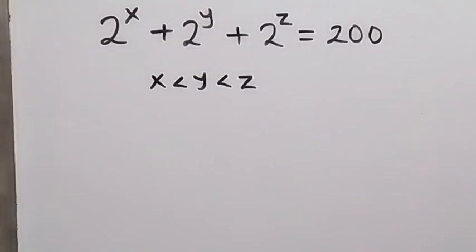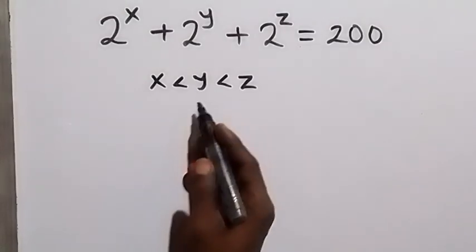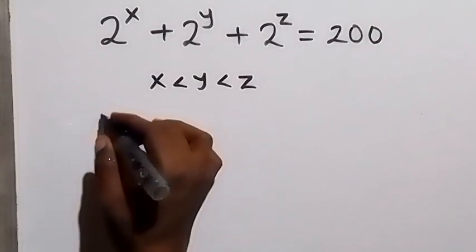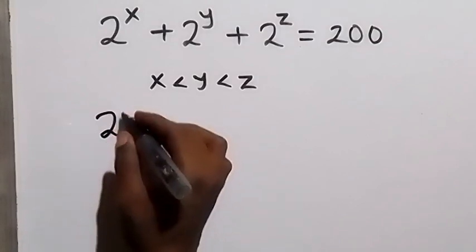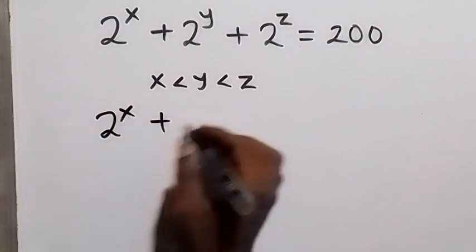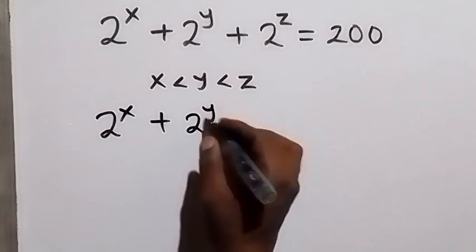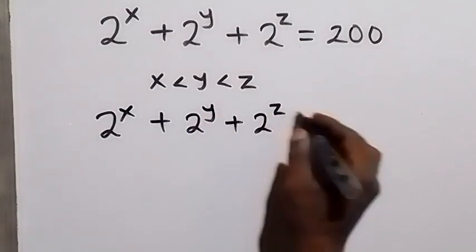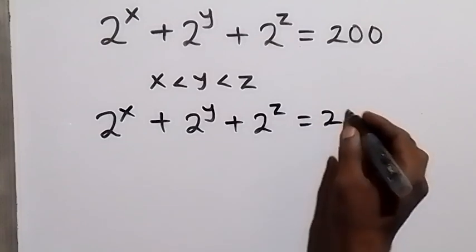Hello, you are welcome. How to solve this nice algebra problem: here we are finding the positive integer values of x, y, and z, where x is less than y less than z. We have 2 raised to power x plus 2 raised to power y plus 2 raised to power z equals 200.